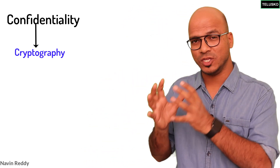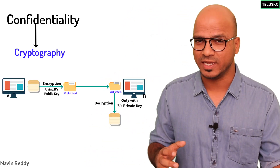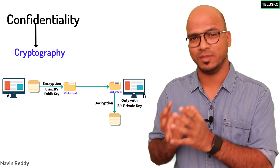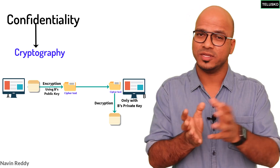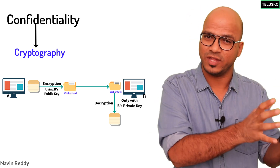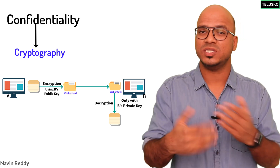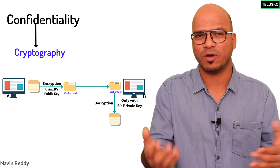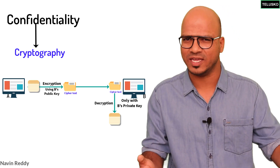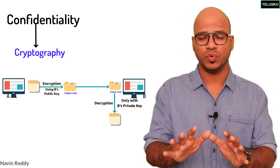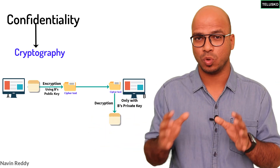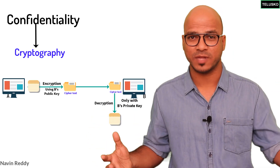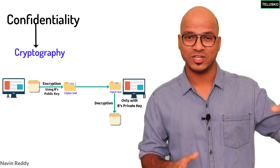What we do is use a receiver's public key to encrypt the message. Then the moment this message is received at the receiver's end, the receiver will decrypt the message with the help of their own private key. No one else can decrypt the message because no one has the receiver's private key. So that works — we have achieved confidentiality.